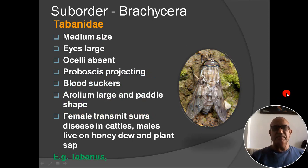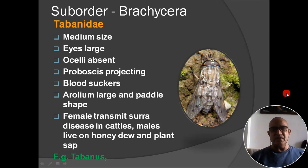First family of Brachycera: Tabanidae. Insects are medium sized; eyes large; ocelli absent; proboscis projecting; blood suckers; arolium large and paddle-shaped. Males transmit surra disease in cattle. Males live on honeydew and plant sap — they feed on honeydew and plant sap. Example: Tabanus (horsefly).